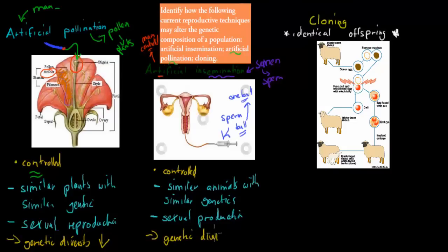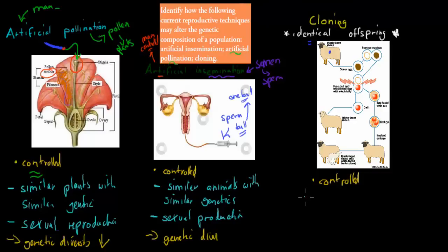For the last technique, cloning, we have identical offspring. We take the cells of a sheep we want to clone, put it into an egg, and thereby produce lots of sheep identical to the original. Cloning is controlled — we choose which sheep to clone — and the key difference is the offspring are identical to the parent, not just similar, making it asexual reproduction.